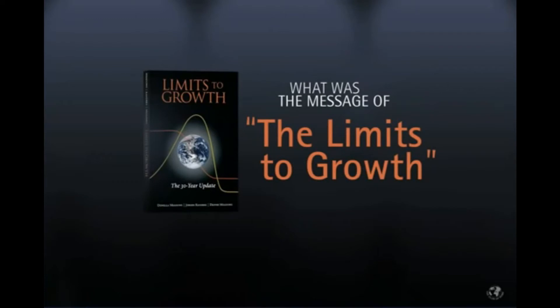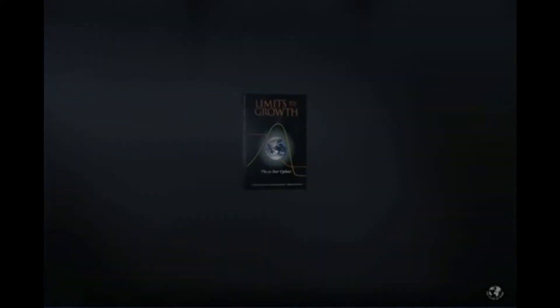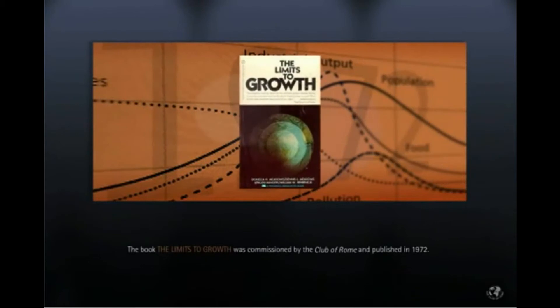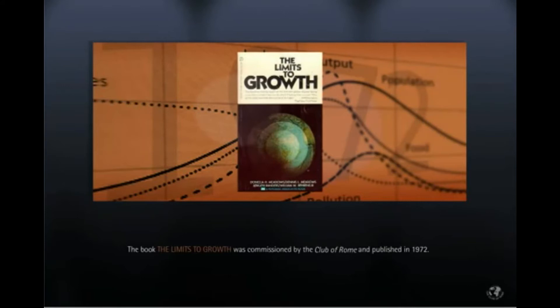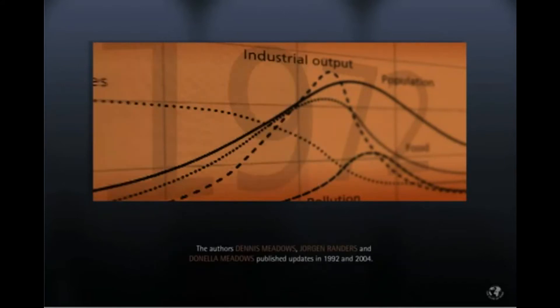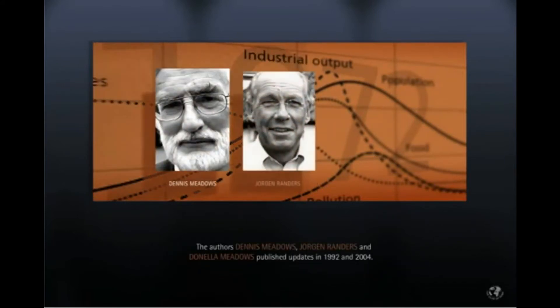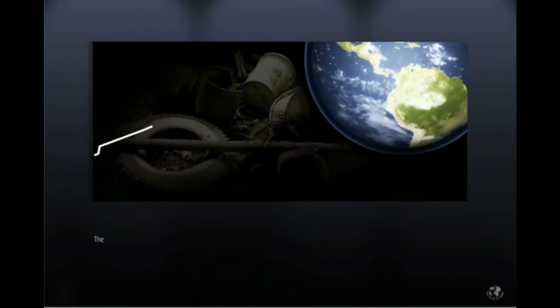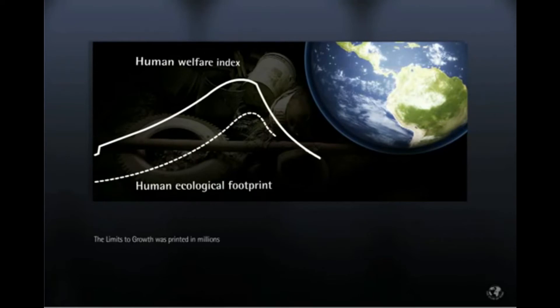What was the real message of Limits to Growth? Chapter 1: The book, The Limits to Growth, was commissioned by the Club of Rome and published in 1972. The authors, Dennis Meadows, Jorgen Randers, and Donella Meadows, published updates in 1992 and 2004. The Limits to Growth was printed in millions of copies, but its results have often been misunderstood or misinterpreted.